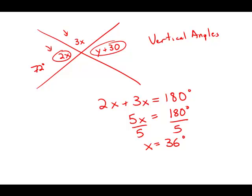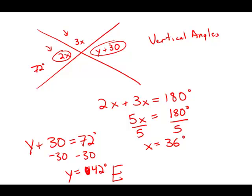So if 2x equals 72, it means that y plus 30 also has to equal 72 degrees. Well, subtracting 30 from both sides, we get that y equals 42. And this is answer choice E.